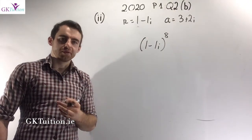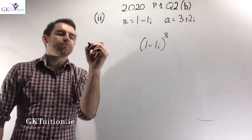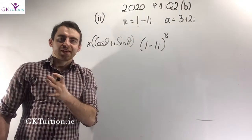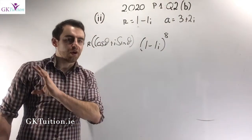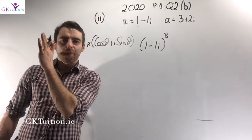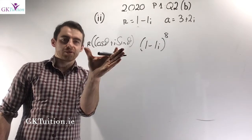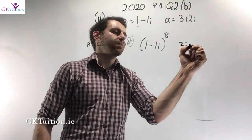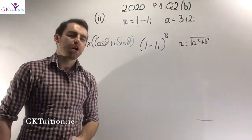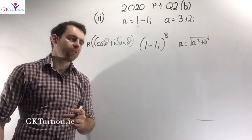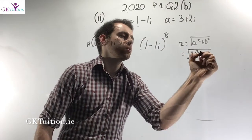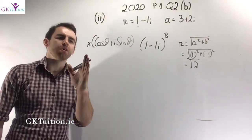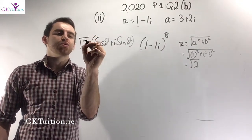In order to use De Moivre's theorem, we first have to write the complex number in polar form. Polar form is r times cos theta plus i sine theta. Remember that r refers to the modulus, calculated as the square root of a squared plus b squared, where a is the real part and b is the coefficient of i. Here, a is 1 and b is minus 1, so r equals the square root of 1 squared plus 1 squared, which is the square root of 2.